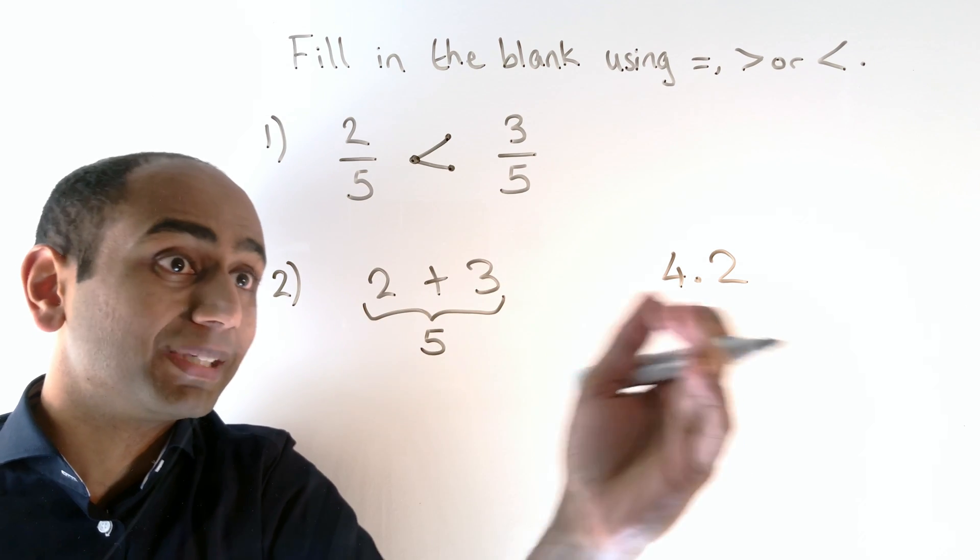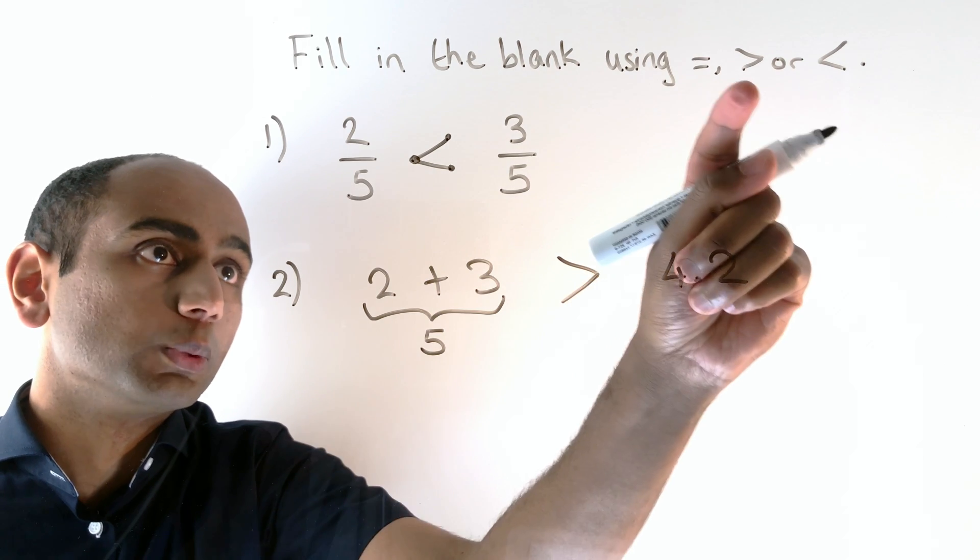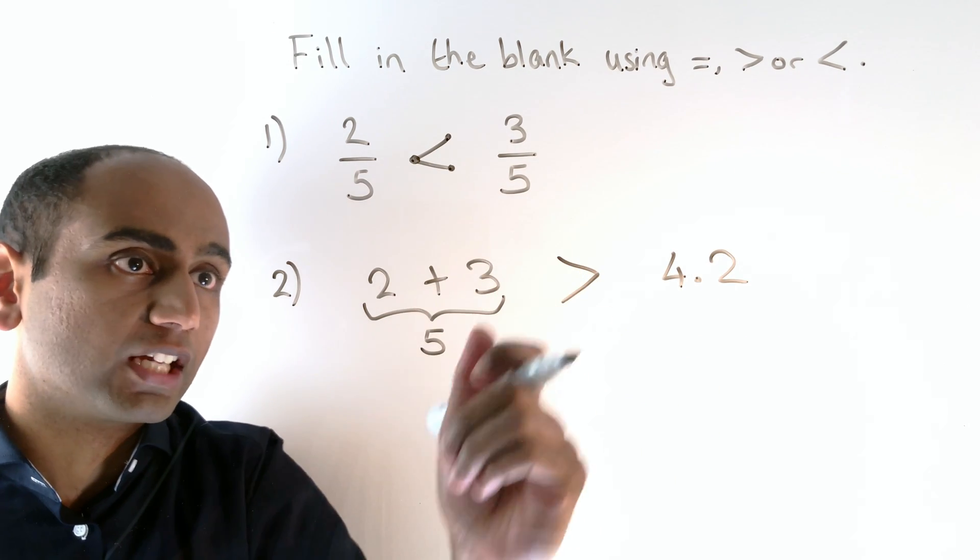5 is bigger than 4.2, so it's greater than 4.2, which means we want that symbol there, the greater than symbol.